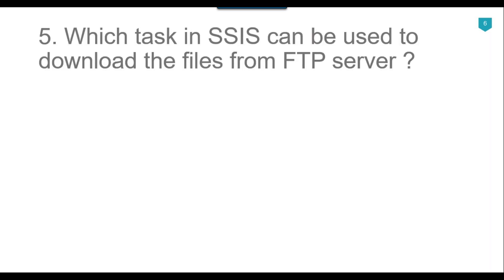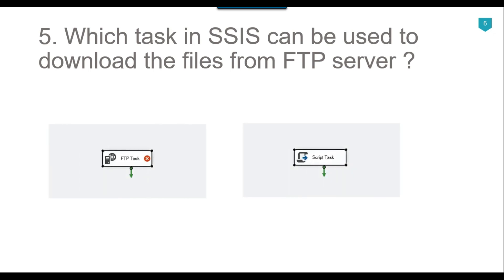Our fifth question is: which task in SSIS can be used to download files from an FTP server? We have the FTP Task and the Script Task — both can be used to download files from the FTP server. The FTP Task is especially created to download or upload files from the FTP server, making it very easy. You can also use C# code in the Script Task to upload or download files. I have created a video showing how to download files using the FTP Task, and I can share the link in the description.